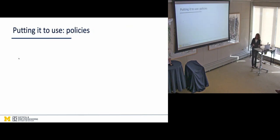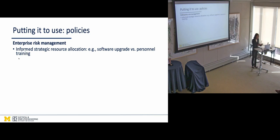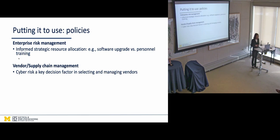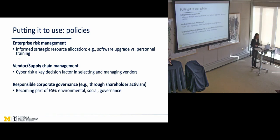How do we put it to use? And that's how policies come into play. This technology is currently used for enterprise risk management to inform strategic resource allocation decisions, so on, such as, should I perform software upgrade versus personnel training? Much of social engineering has to do with training your people. It is being used in vendor supply chain management because cyber risk should be a key decision factor in selecting and managing vendors. We saw that in Home Depot, in Target breaches, or all vendor breaches.